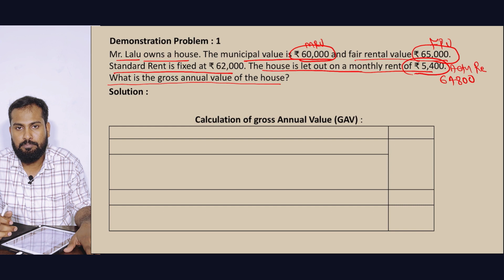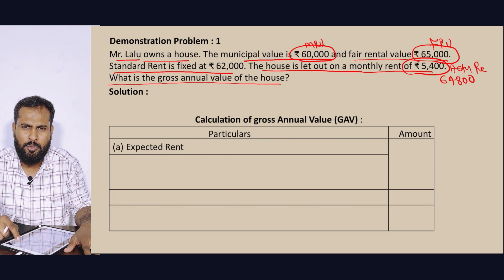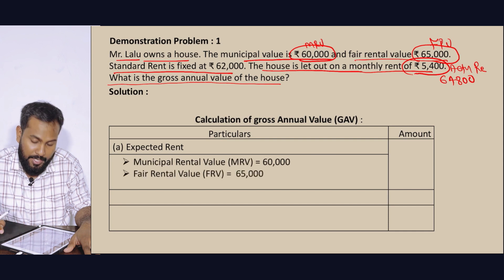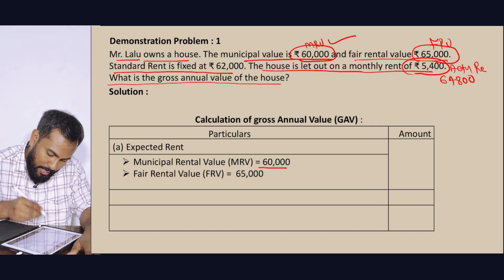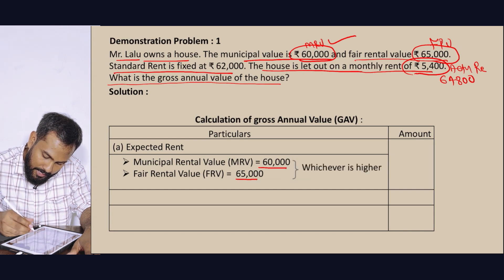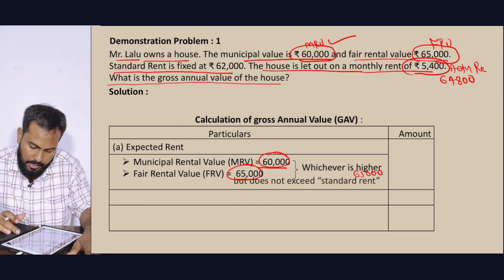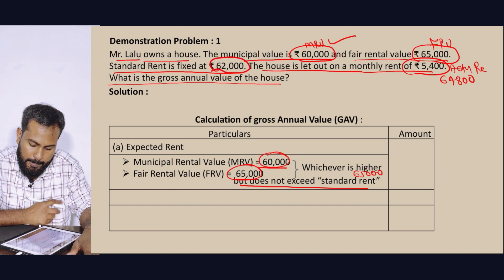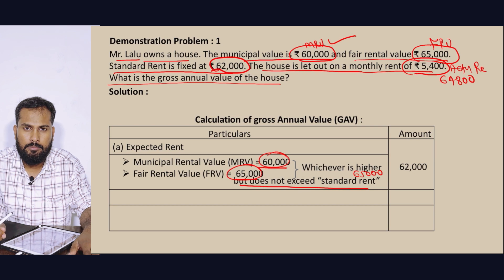Solution: Computational Gross Annual Value. Gross Annual Value — Expected Rental. Expected Rental is equal to: Municipal Rental Value and Fair Rental Value — whichever is higher. Municipal Rental Value: 65,000. Fair Rental Value: 65,000. This is higher — 65,000. But does not exceed Standard Rent. Standard Rent: 62,000. You can't go up to standard rent — it is higher.